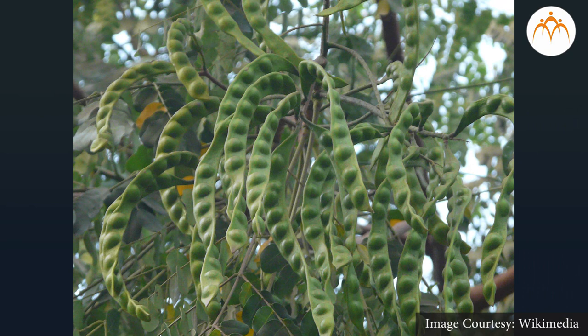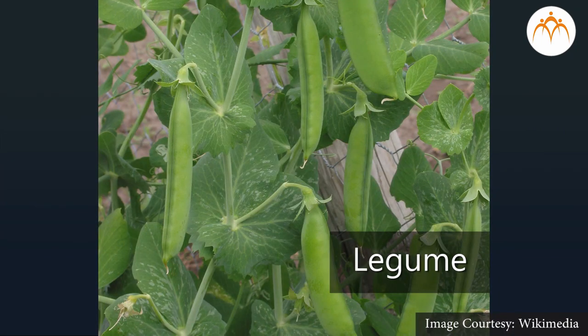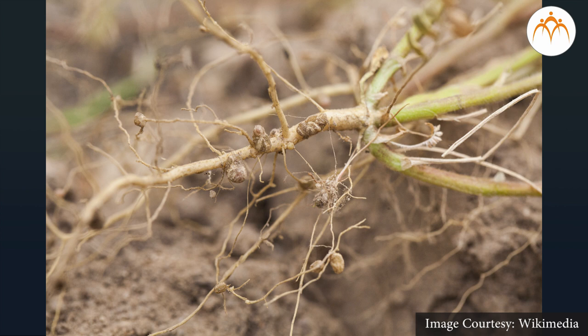Students, this practical is about bacteria present in root nodules of leguminous plants. Leguminous plants are plants having legume type of fruits like all pulses, fenugreek, peanuts, beans, etc. Before you proceed with the practical, you must know a little about these bacteria. The bacteria inside root nodules of leguminous plants are rhizobium.